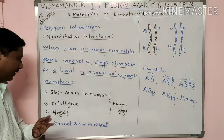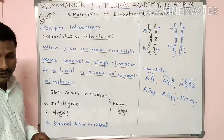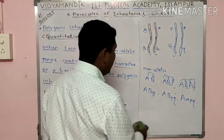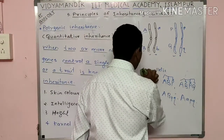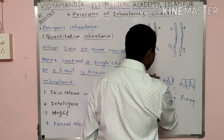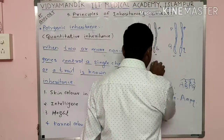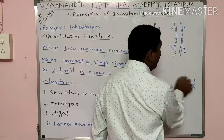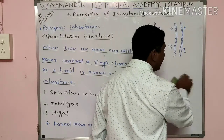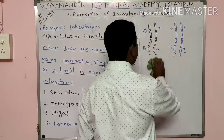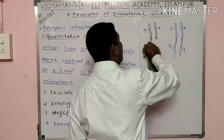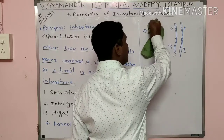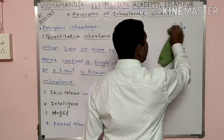Human skin color has different variants. The variants in human skin color include: full black or negro, and dark brown.